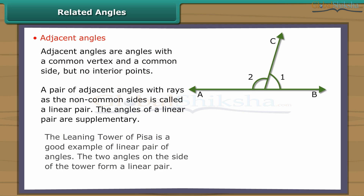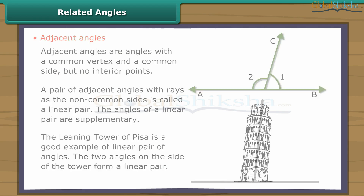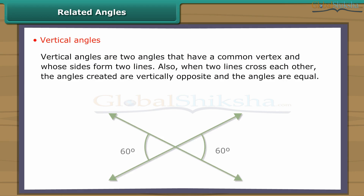A pair of adjacent angles with rays as the non-common sides is called a linear pair. Vertical angles are two angles that have a common vertex and whose sides form two lines.